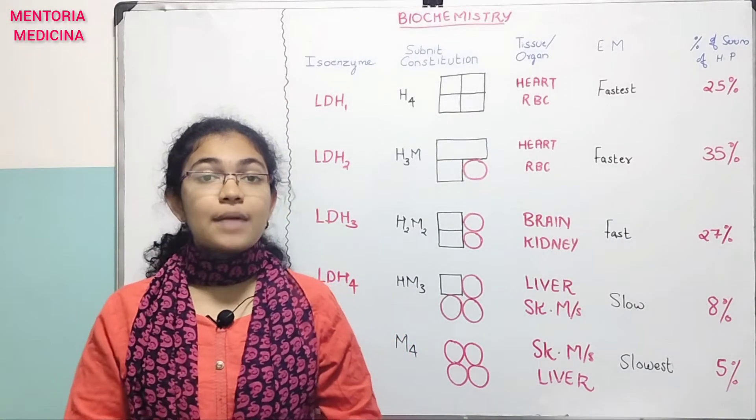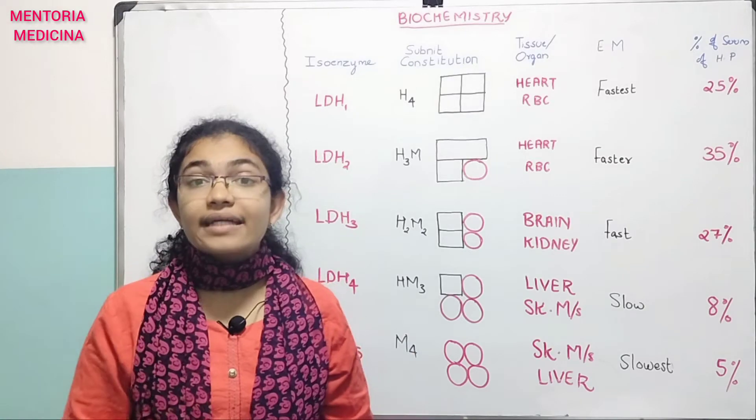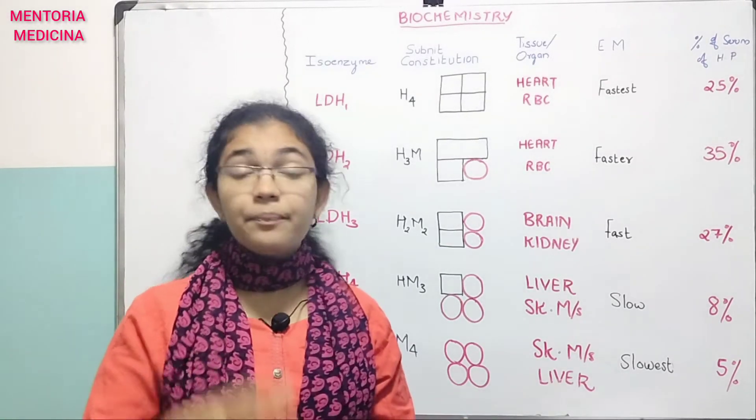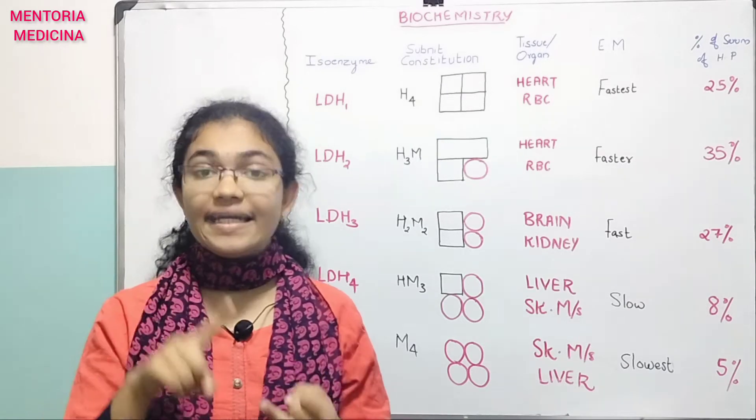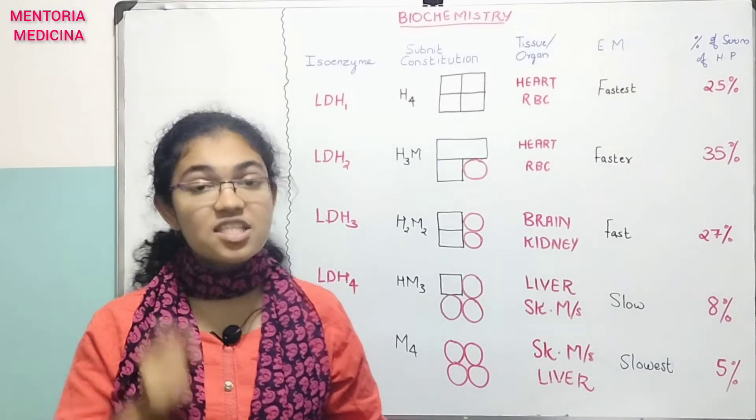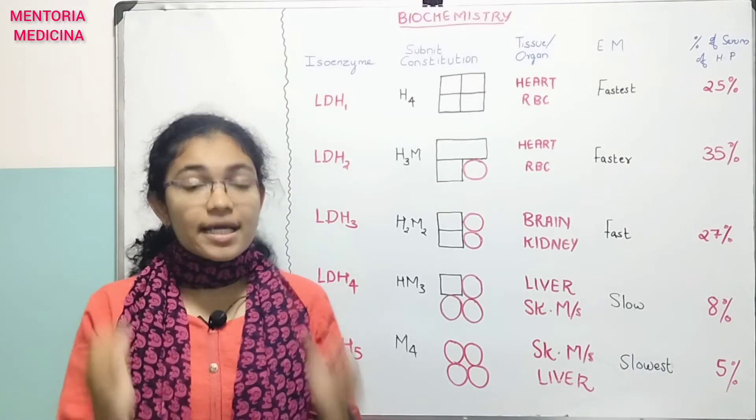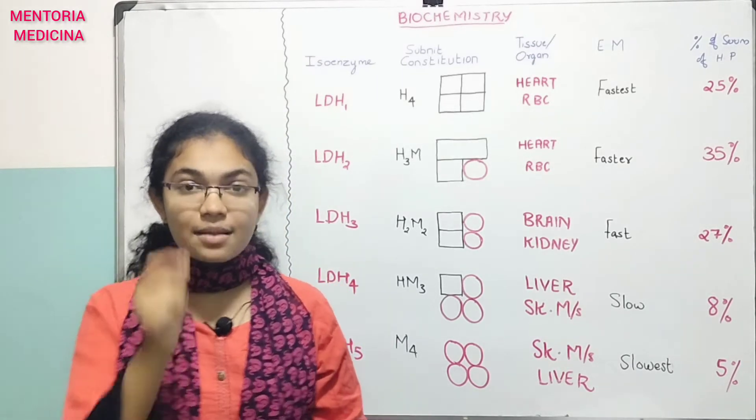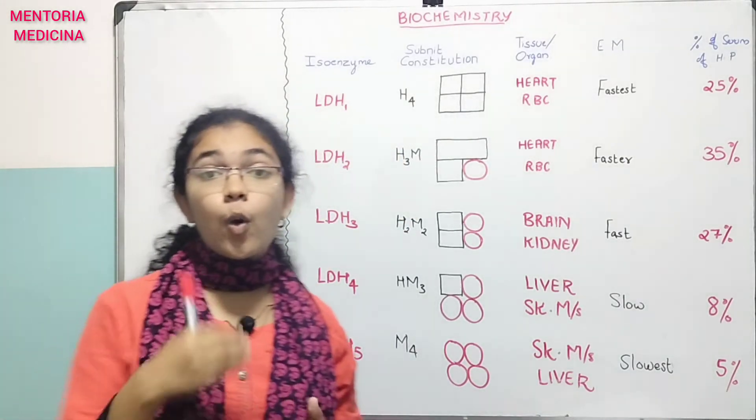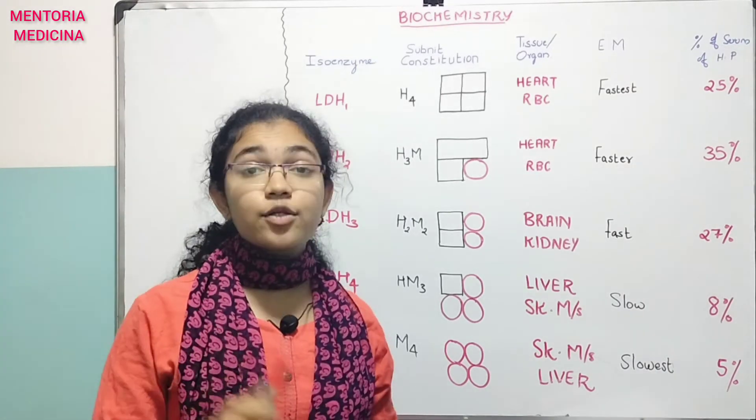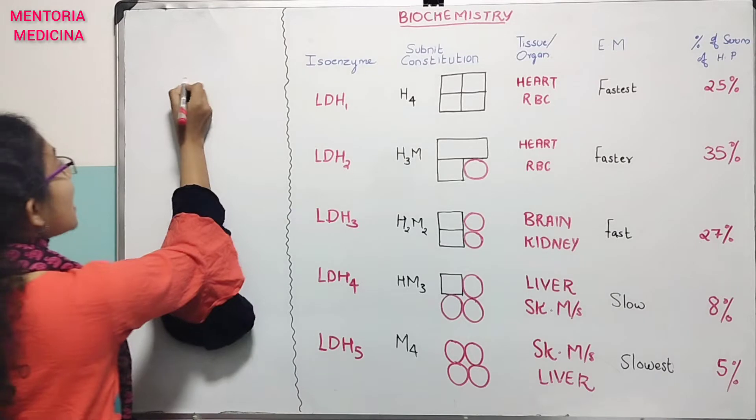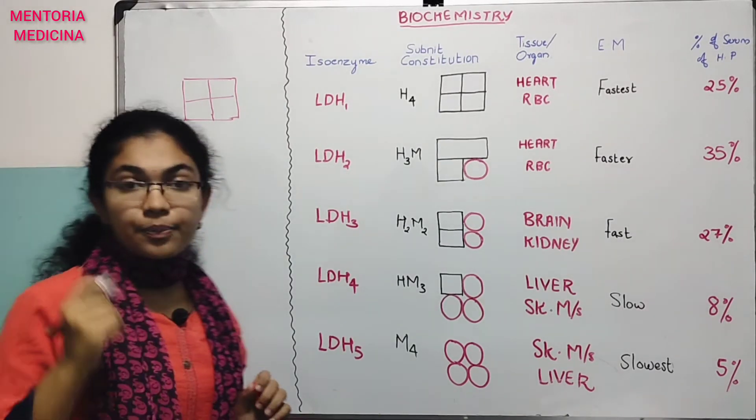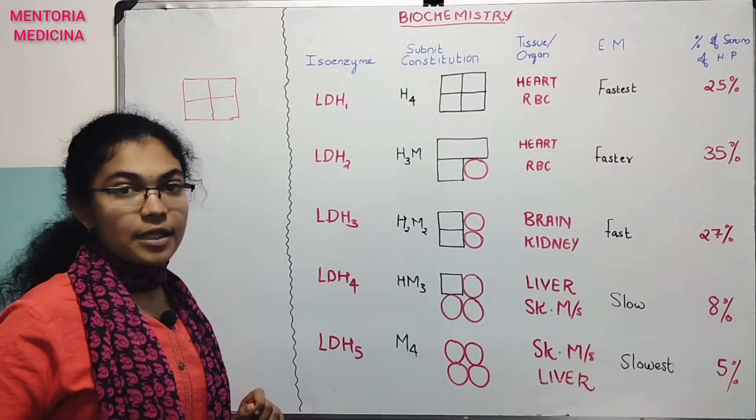Example: isoenzymes of LDH, that is lactate dehydrogenase isoenzymes. Now, LDH1, LDH2, LDH3, LDH4, and LDH5. The structure is an oligomeric structure.